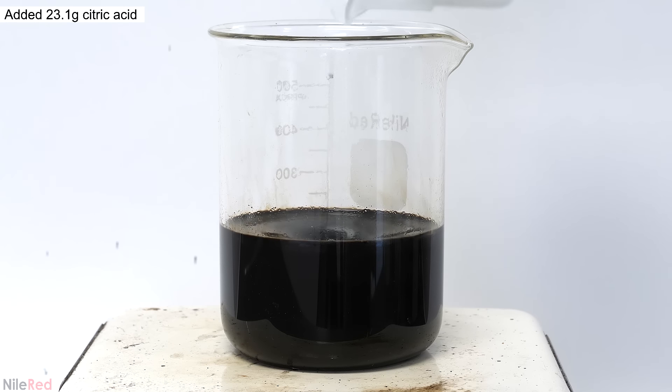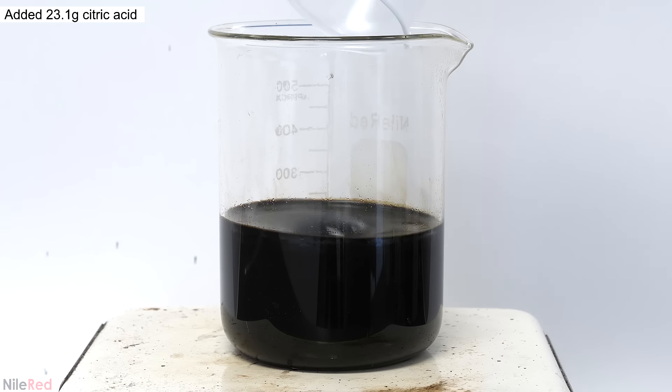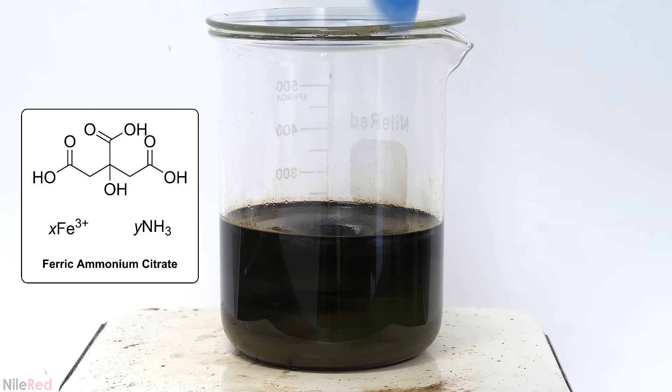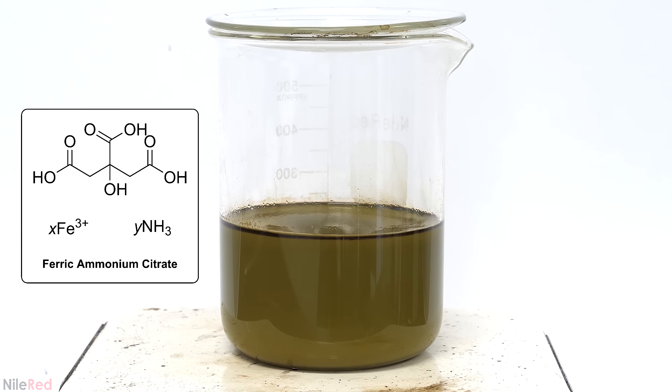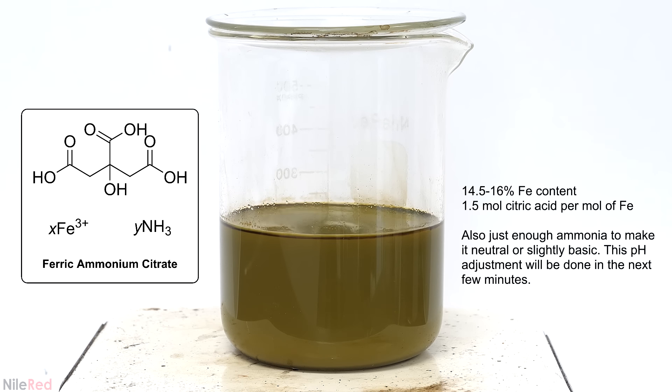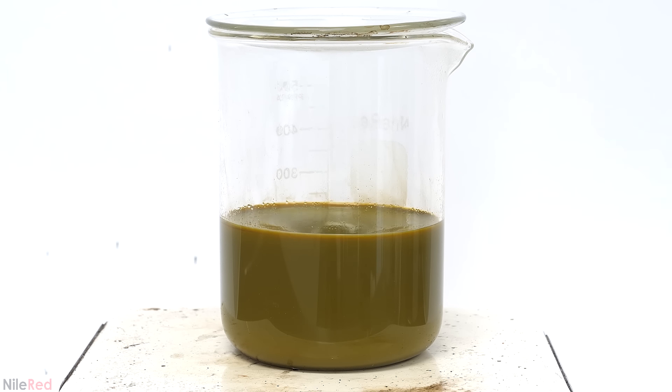After the 90 minutes, I dumped in another 23.1 grams of citric acid and a green precipitate appeared. I'm honestly not exactly sure what the precipitate was, but I know that in this step I was forming the final ferric ammonium citrate complex. The final composition of the ferric ammonium citrate can vary a lot, but this one should be between 14 and 16% iron and have about one and a half moles of citric acid for every mole of iron.